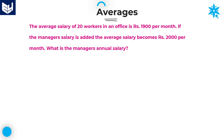The average salary of 20 workers in an office is 1,900 per month. If the manager's salary is added, the average salary becomes 2,000 per month. What is the manager's annual salary? That is the question.